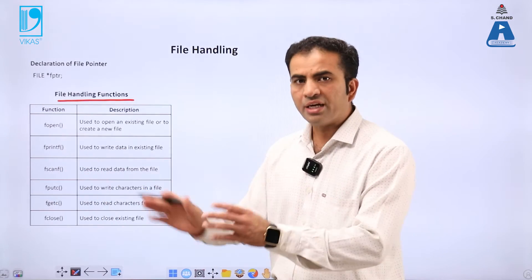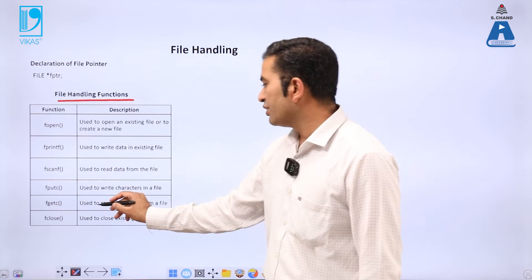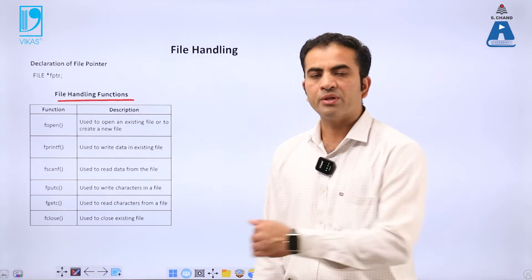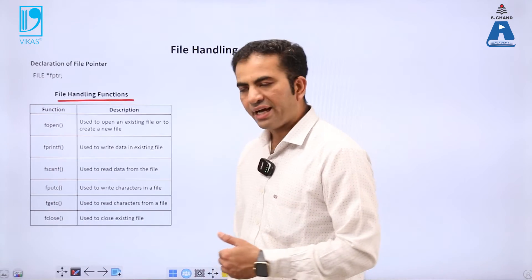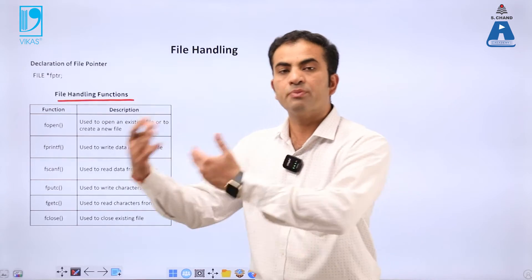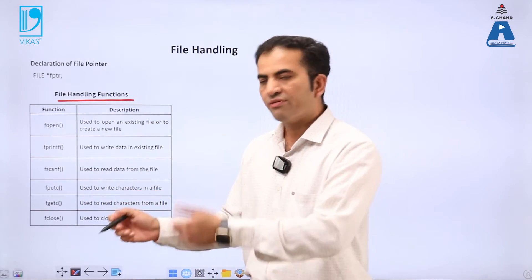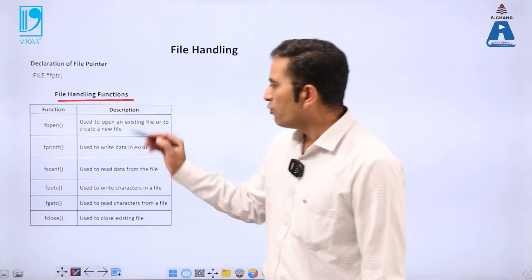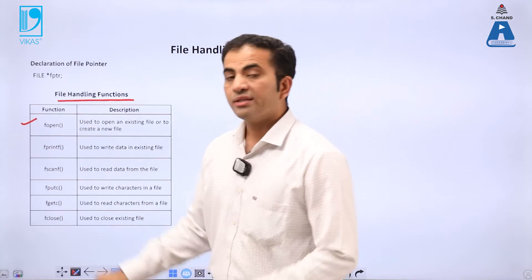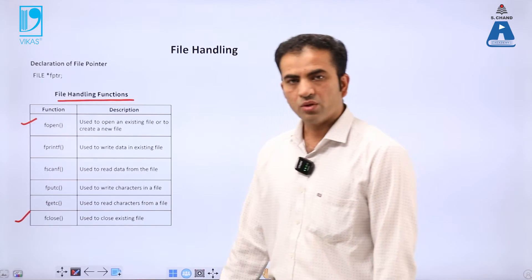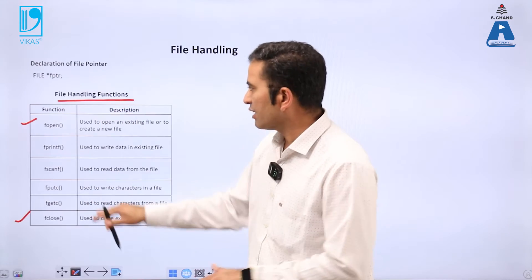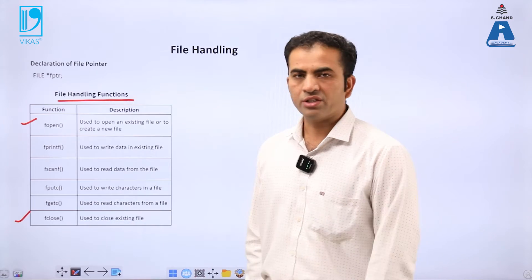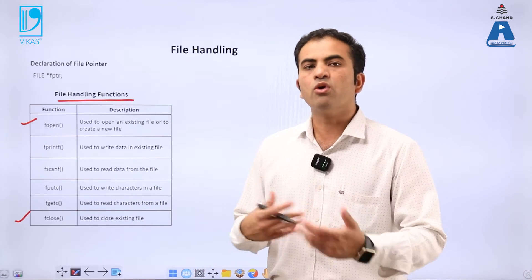fprintf and fputc are similar but with a difference. Similarly, fgetc is used to read a character from a file. The purpose of both fscanf and fgetc is to read characters from the file and display on the monitor, but there is a difference between them. fclose is used to close the existing file — whatever file we have opened needs to be closed. These are the very basic functions of file handling; there are other functions also, but we will study these basic ones.